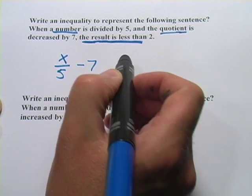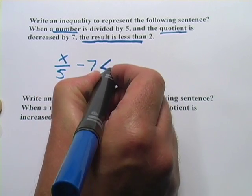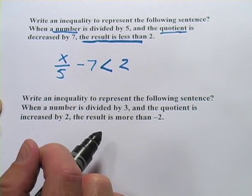Then it says the result is less than 2. So it's a less than sign and a 2. And that's all there is to that one.